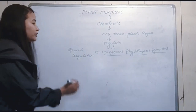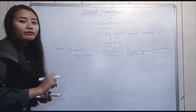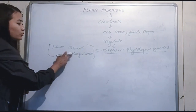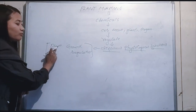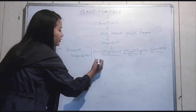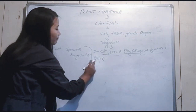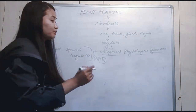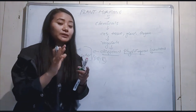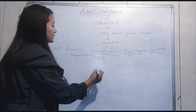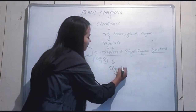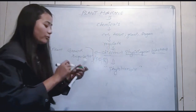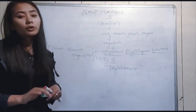Plant hormones are also called plant growth regulators. The abbreviation is PGR — Plant Growth Regulator. Plant hormones are also called phytohormones, meaning hormones which are present in plants.